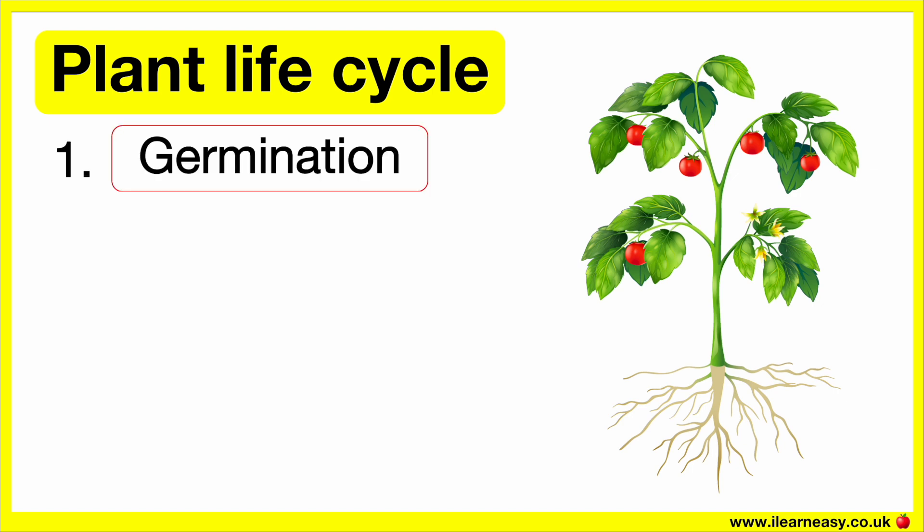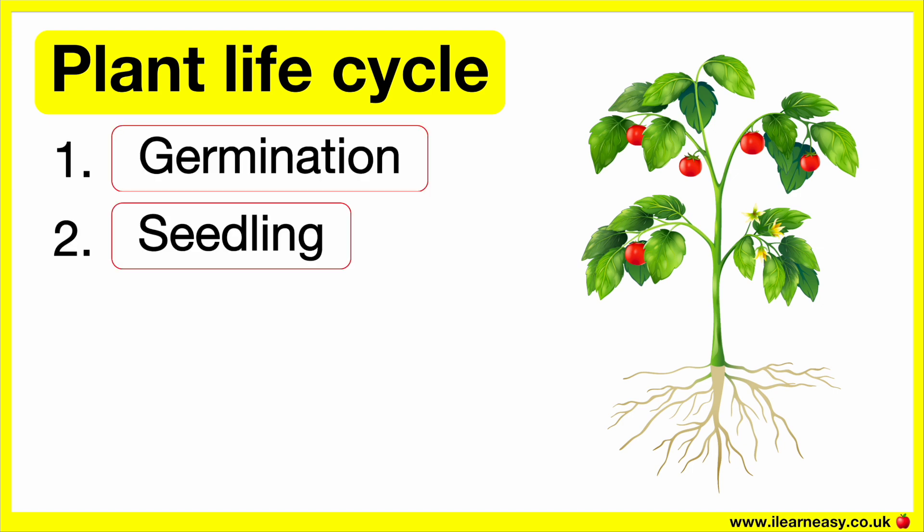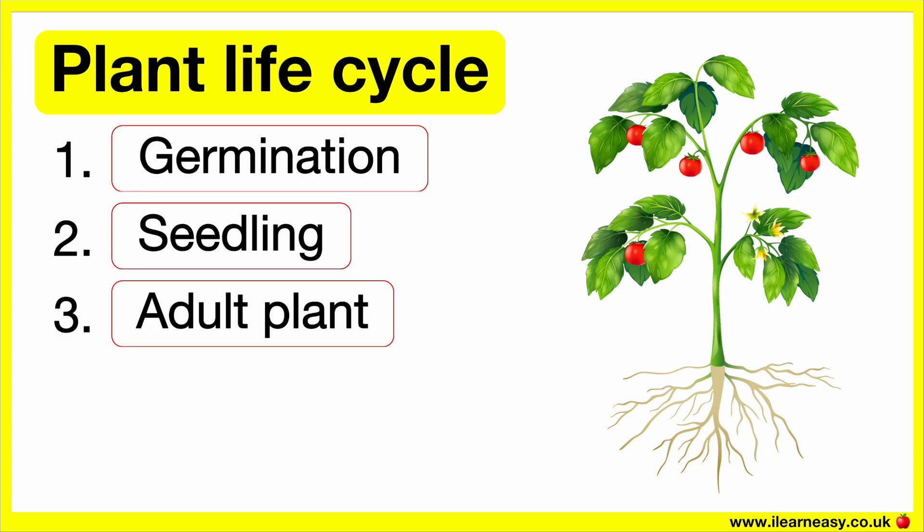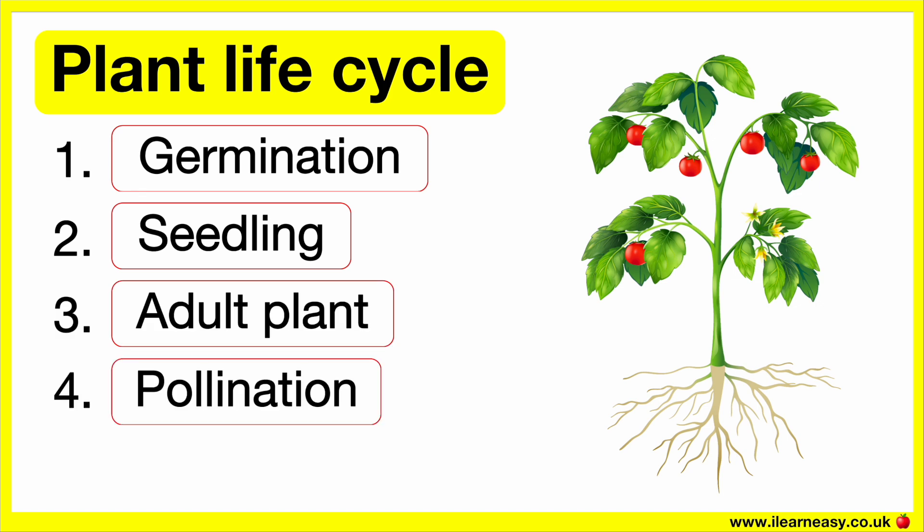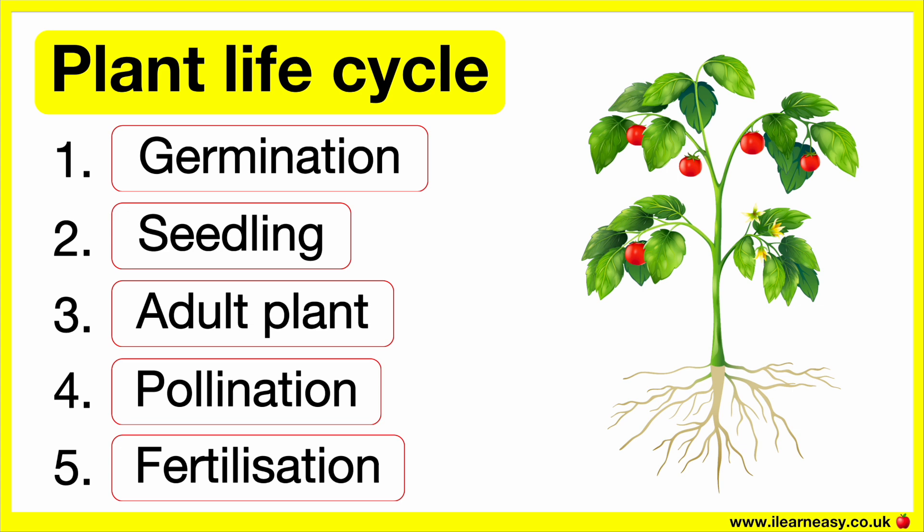The five stages are: Germination, Seedling, Adult plant, Pollination, and Fertilisation.